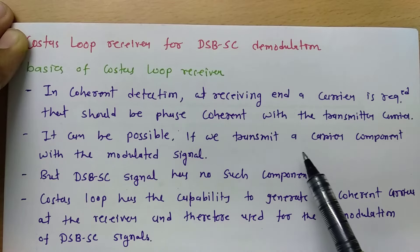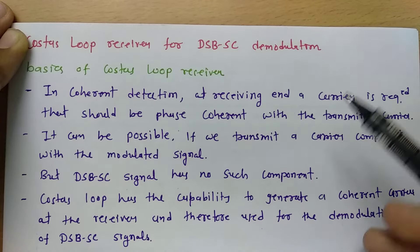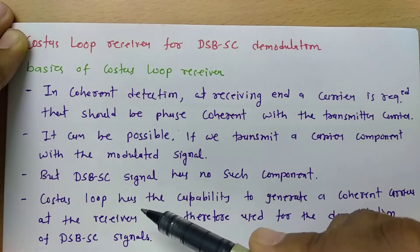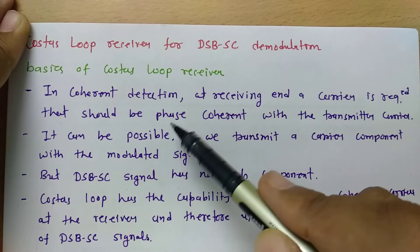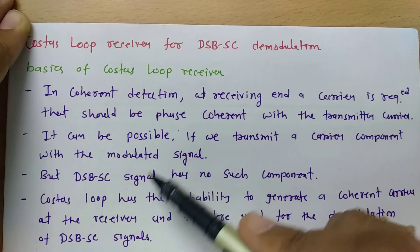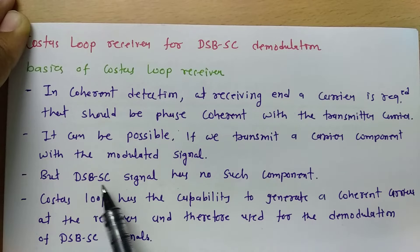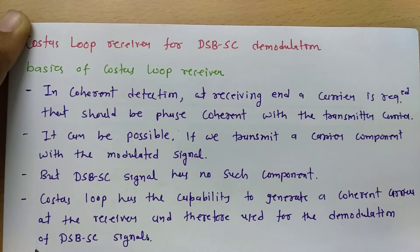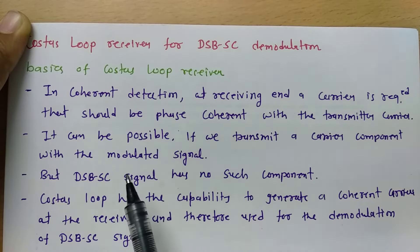Coherent detection is possible if we transmit the carrier component with the modulated signal. However, if you look at a DSBSC signal, it has a suppressed carrier — double sideband suppressed carrier. In DSBSC there is no carrier component, so coherent detection by having a separate carrier signal is not possible.